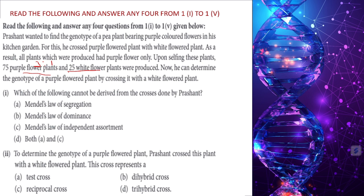Which of the following cannot be derived from the crosses done by Prashant? He performed a monohybrid cross, from which he can derive Mendel's Law of Segregation and dominance. However, he cannot derive Mendel's Law of Independent Assortment, which is only applicable for a dihybrid cross. So the answer is: Mendel's Law of Independent Assortment cannot be derived.